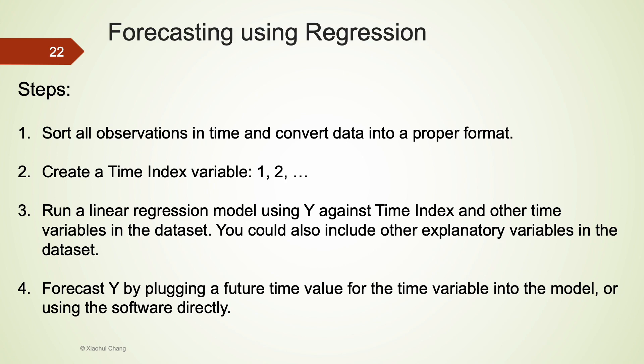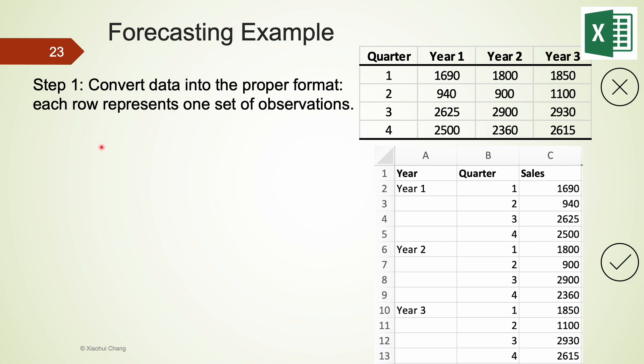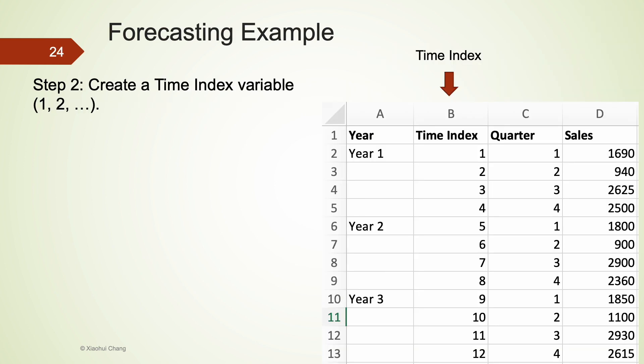I'm going to show you how we can do these four steps for our textbook example. In step one, we convert data into a proper format and make sure that each row represents one set of observations. We cannot use the raw data format given earlier. We have to create three columns to represent the year, quarter, and the sales. Each row represents one of the 12 data points we have seen earlier. And also make sure that the sales data is sorted in time. In step two, we create a time index variable starting from one. This variable is saved in column B. The first quarter in year one has a time index of one, and the second quarter in year one has a time index two. The last quarter in year three has a time index of 12. It is very essential to have this step when you try to forecast using linear regression.